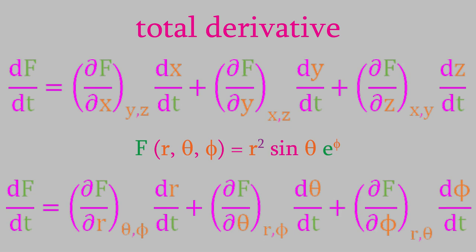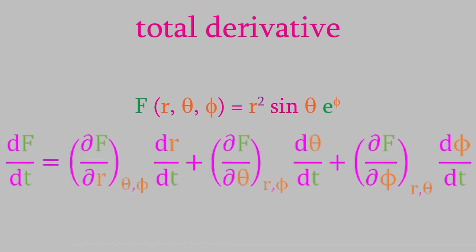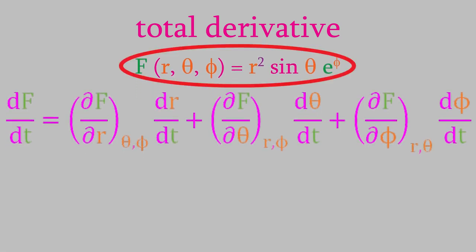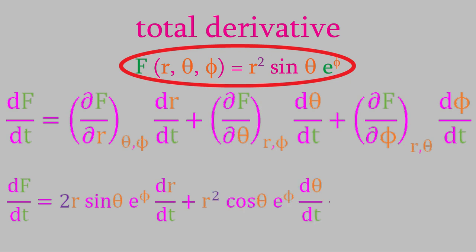That's what the total derivative is. Notice that since we know what the function f is, we can determine each of those three partial derivatives. The partial with respect to r is 2r sin theta e to the phi. The partial with respect to theta is r squared cos theta e to the phi. And the partial with respect to phi is r squared sin theta e to the phi. So, now that we understand how a total derivative works, we can apply that to the function A, the Helmholtz free energy.